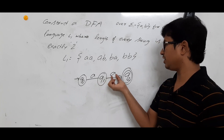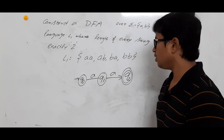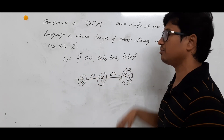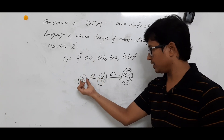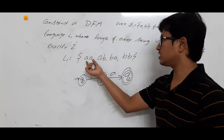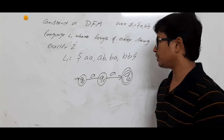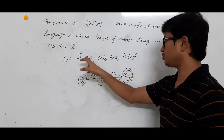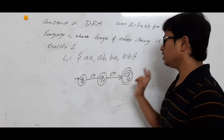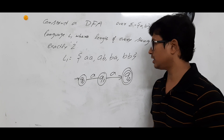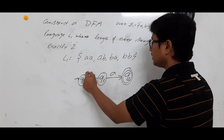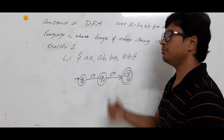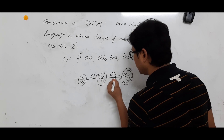The reason is that from initial state q0, if I take 'a' I go to q1, and from q1 if I take 'a' I must reach the final state q2. The meaning is: by taking a string from the initial state, if you reach the final state, that string is accepted by the DFA. Similarly, from q0 on 'b' go to q1, and from q1 on 'b' go to q2, so 'bb' is also accepted.